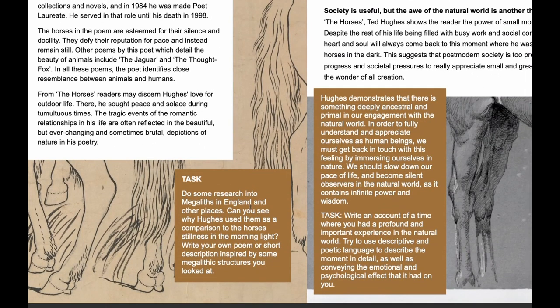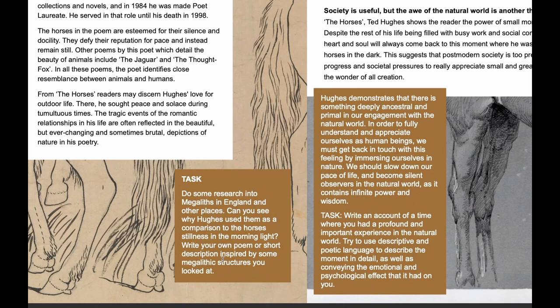If you're interested in the idea of megaliths and primitivism, I recommend looking up pictures of megaliths and thinking about why Hughes would compare the horses to them. It might be that they visually look similar, but I think there's a deeper significance — a symbolic or figurative meaning. He's trying to say that something about the shape or presence of these horses is similar to megaliths, and how humans interacted with megaliths in the past. Think about why megaliths existed, how humans responded to them, and then how the speaker responds to the horses.